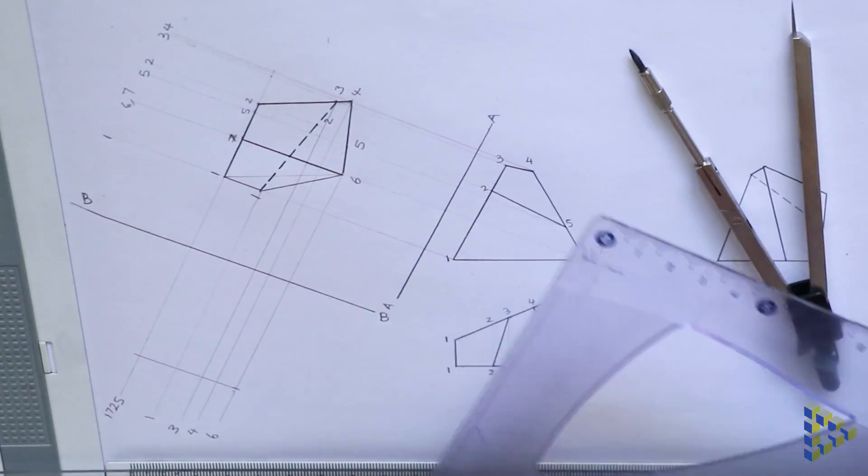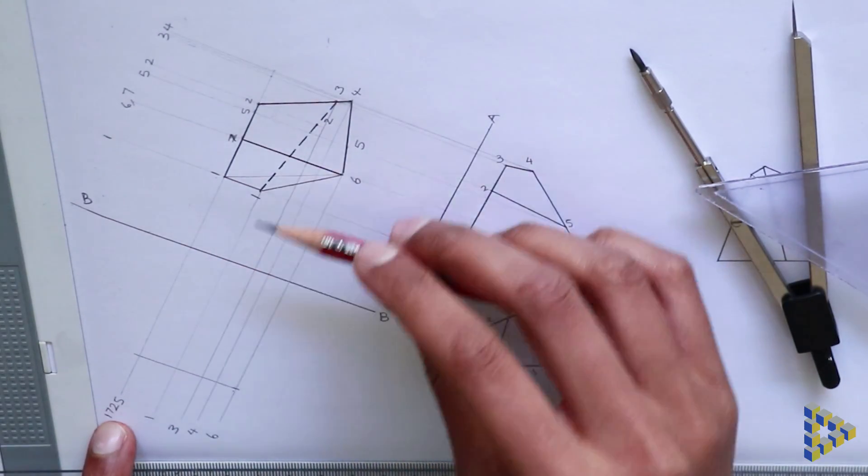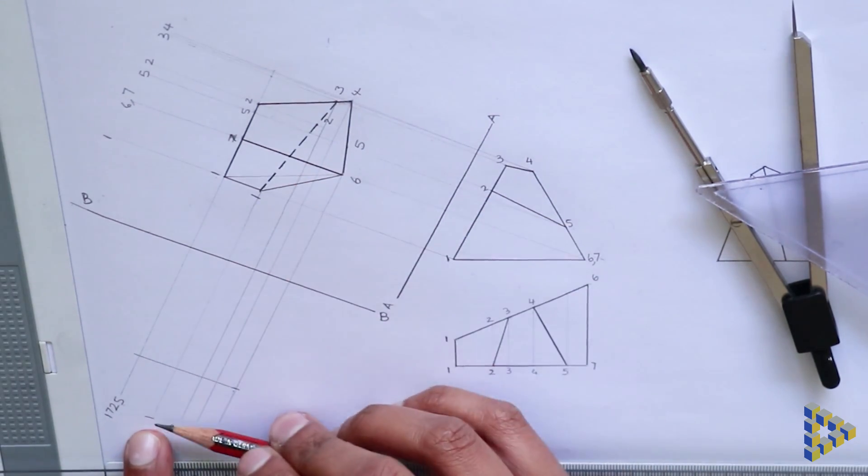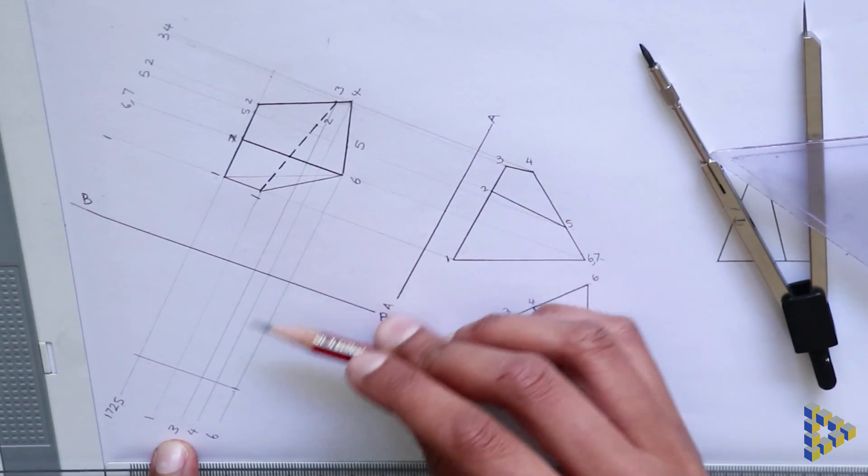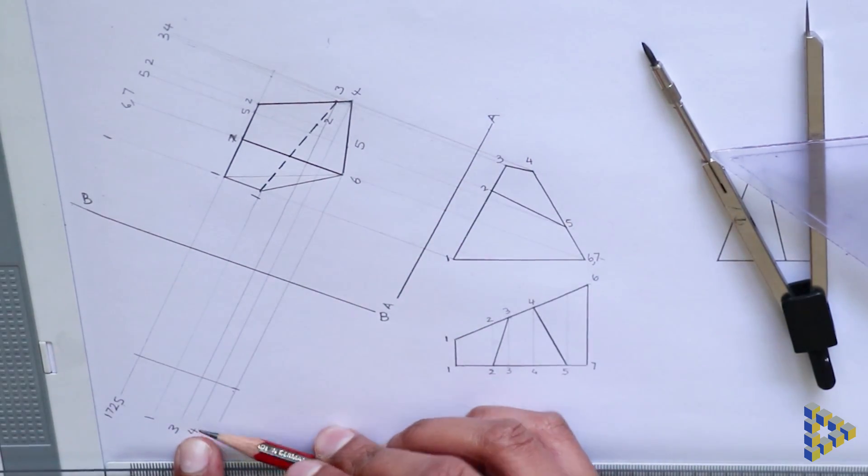To construct the secondary auxiliary view, we follow the same procedure. We use the current view, the primary auxiliary view to project edges, and the previous view, the front view to measure dimensions.